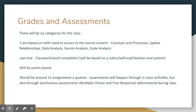For grades and assessments, there are going to be five categories. They'll be the big skills emphasized in the AP Human Geography course outline, as well as probably a classwork completion category. You'll probably see about 15 to 20 assignments in a quarter.